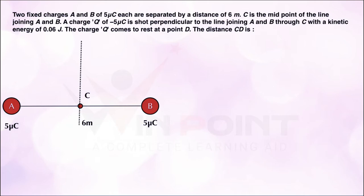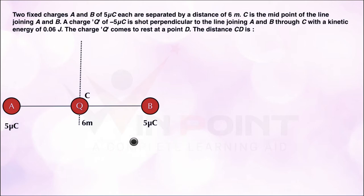Now there is a charge at this midpoint C. This charge Q is having kinetic energy of 0.06 joule — that is the initial stage. The charge Q is minus 5 micro coulombs. We are going to find the total potential energy in the initial case.